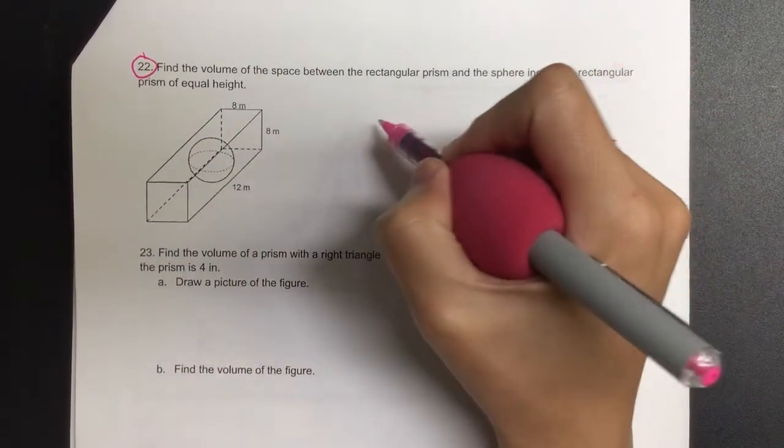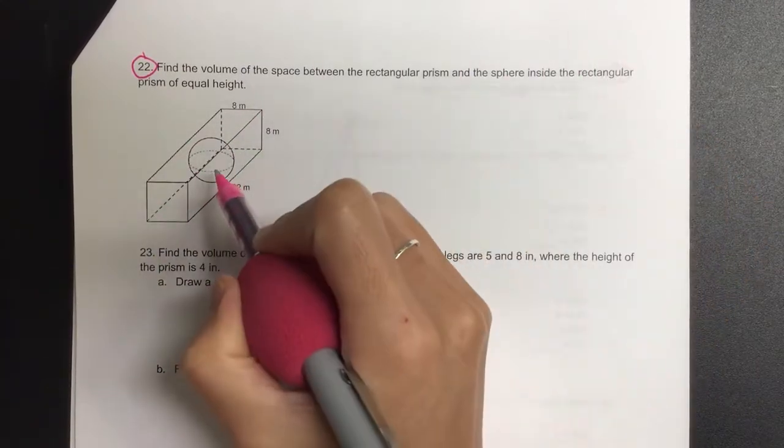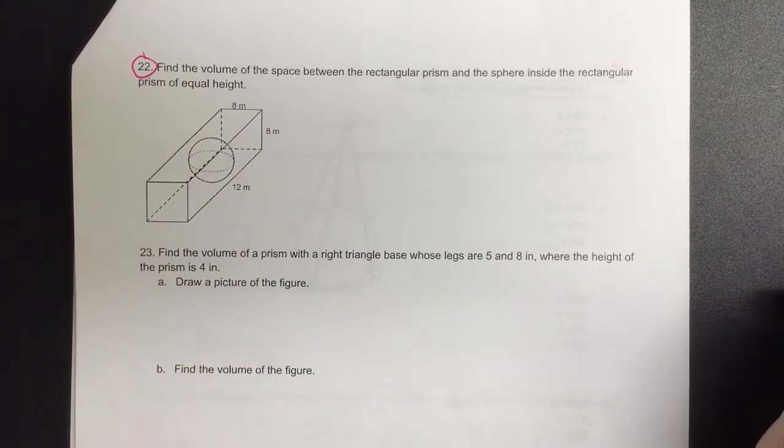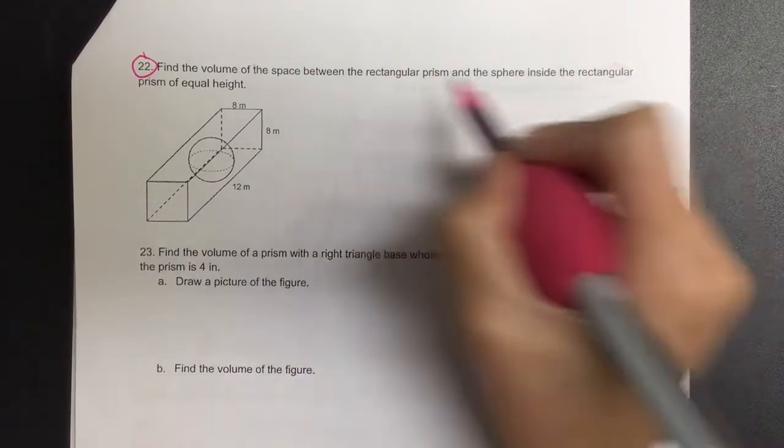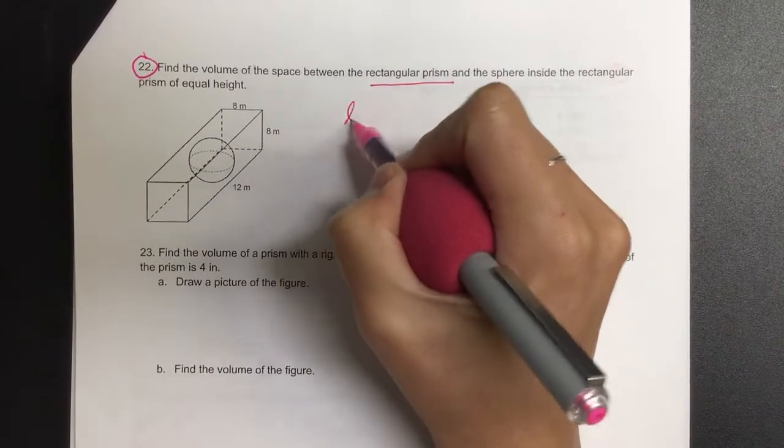So on this one, we need to find the volume of the prism and then subtract out the volume of the sphere. In this case, we have to find the rectangular prism. Could we just say length times width times height?